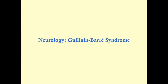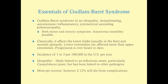Guillain-Barré syndrome is an acute disease of the peripheral nervous system. It is an idiopathic demyelinating autoimmune inflammatory symmetrical ascending polyneuropathy. It's idiopathic in that we don't know exactly what causes it, but we do know it is often followed by an infection — though the patient doesn't always remember it. About 25% of cases are estimated to follow a diarrheal infection.